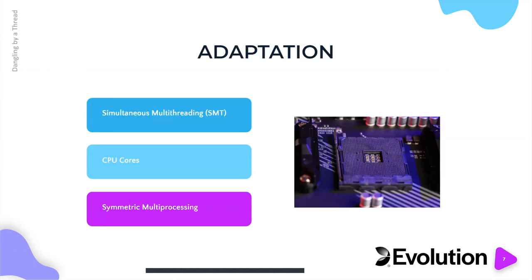Then something happened around 2015. Intel came to us and said no can do — we either listen to you or the laws of physics, and Intel chose the laws of physics. That said, they didn't stop evolving entirely. Moore's law shifted. Instead of doubling CPU speed every 18 months, they're now doubling the number of transistors inside your CPU roughly every 18 months.